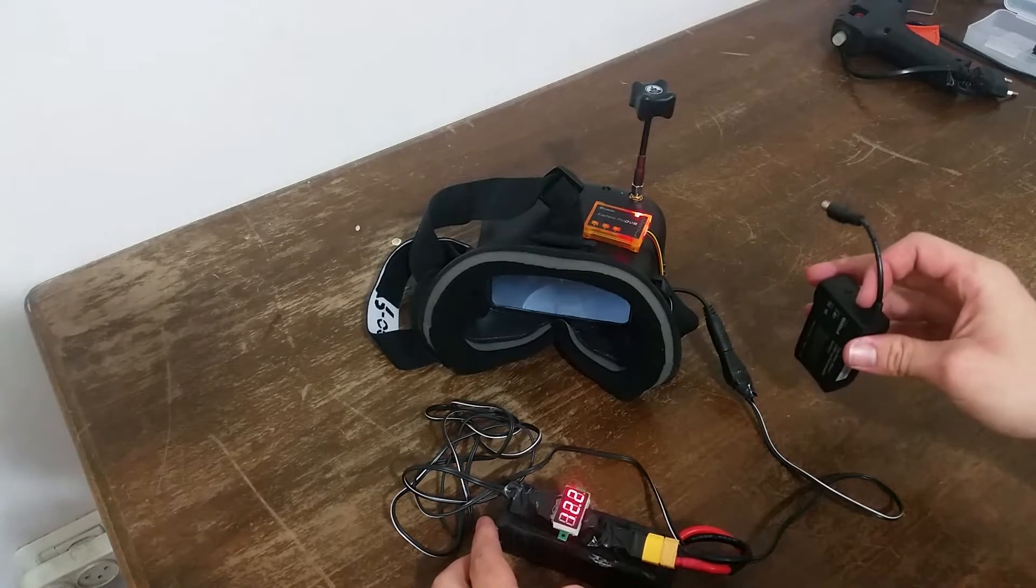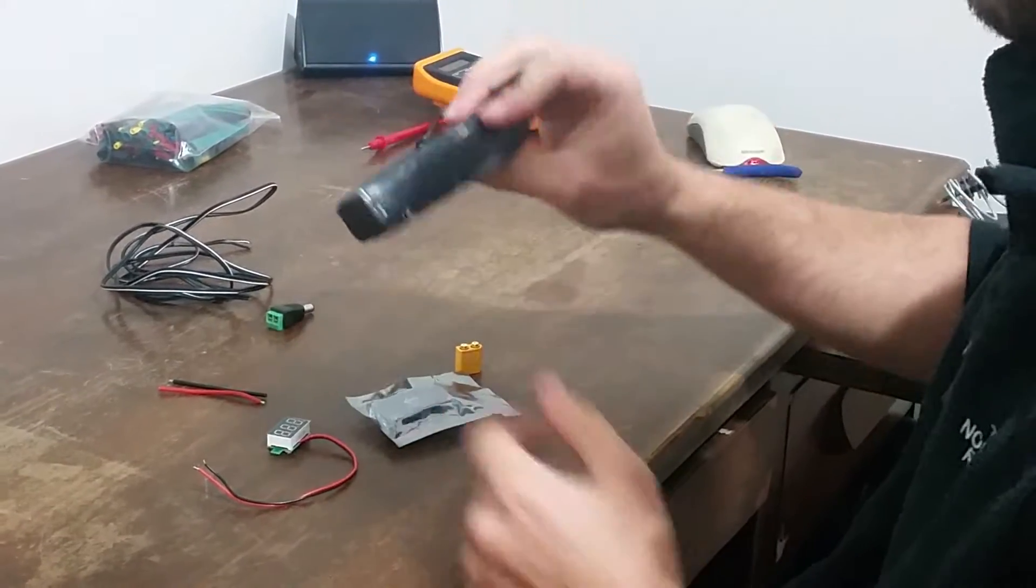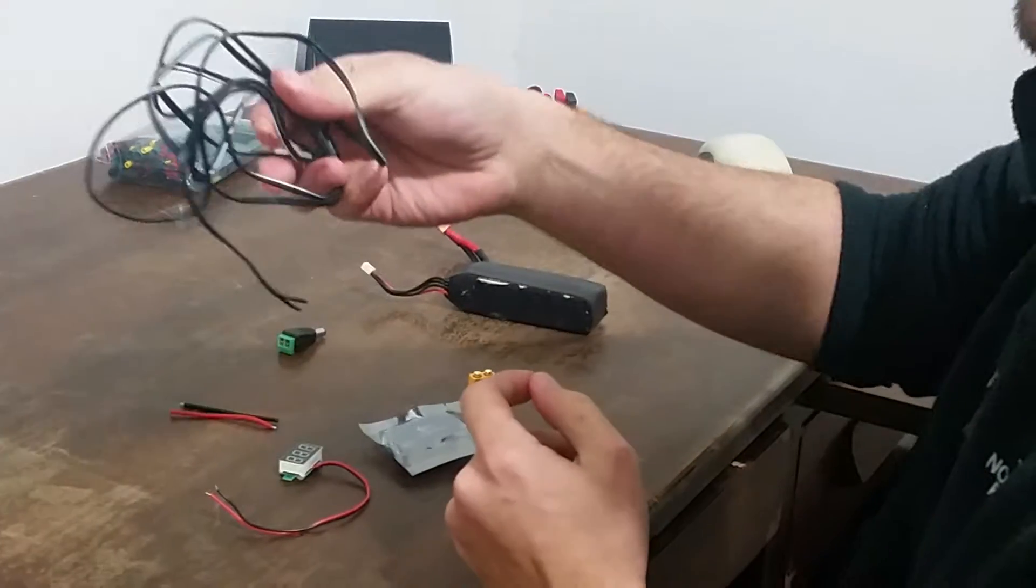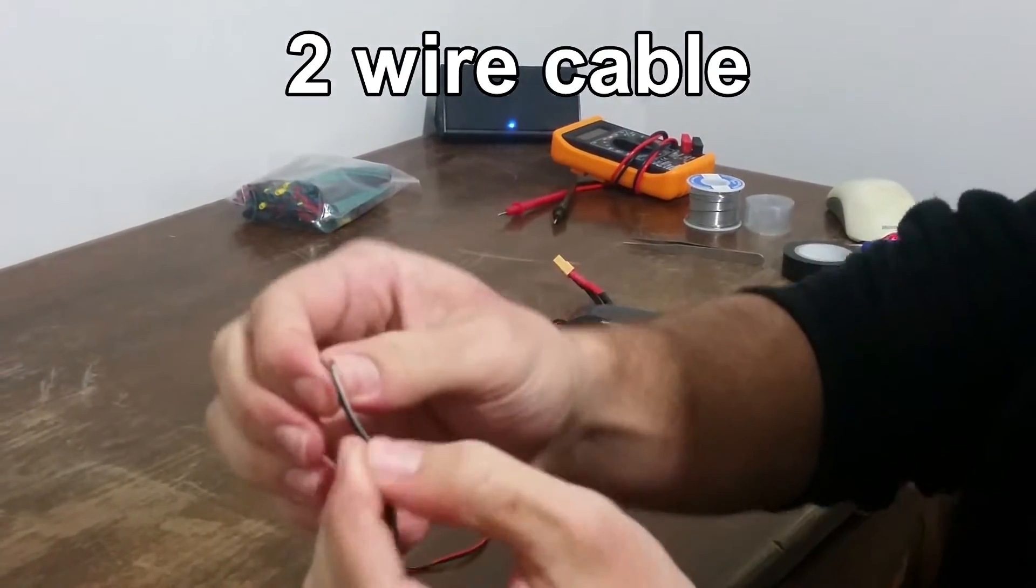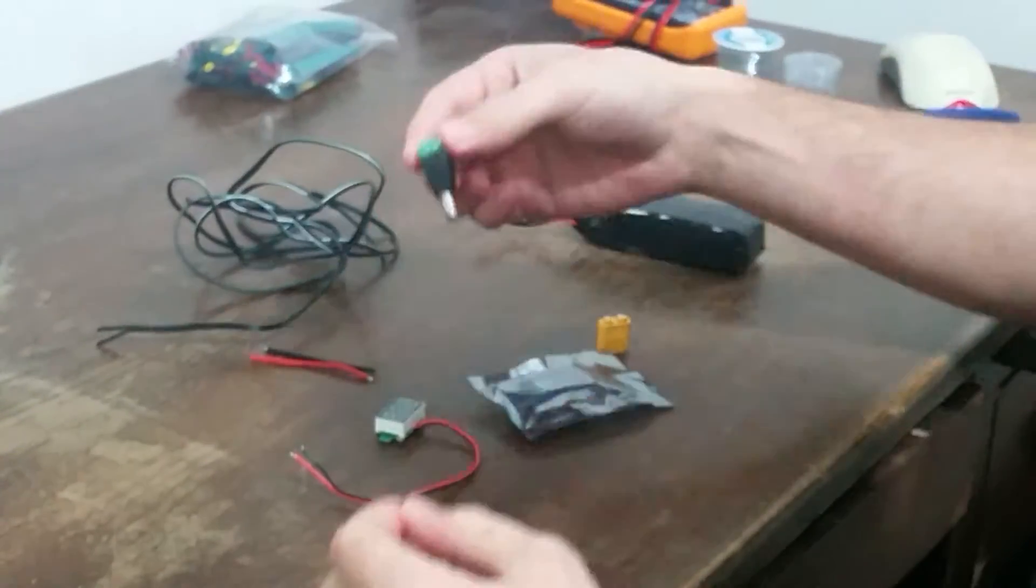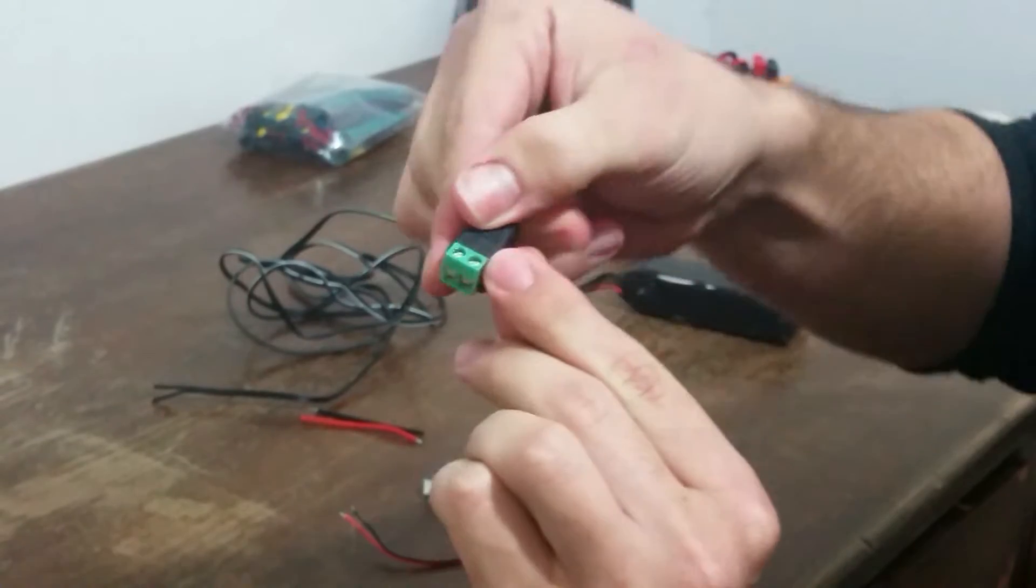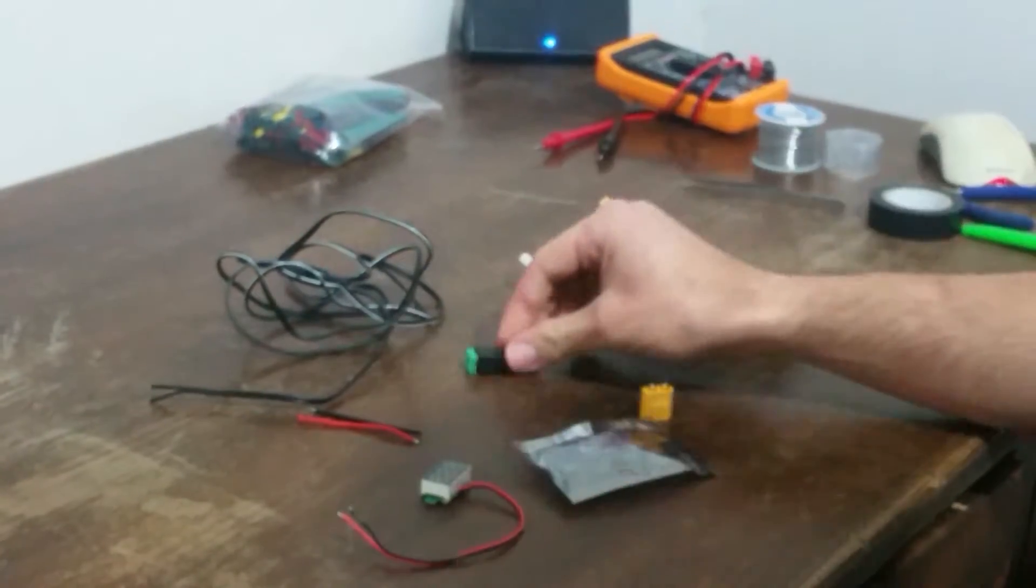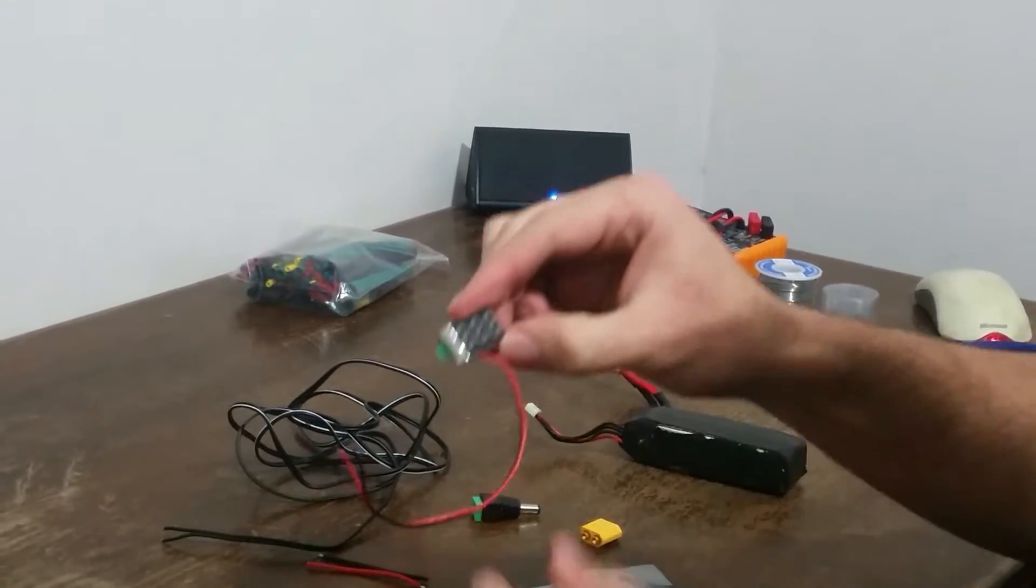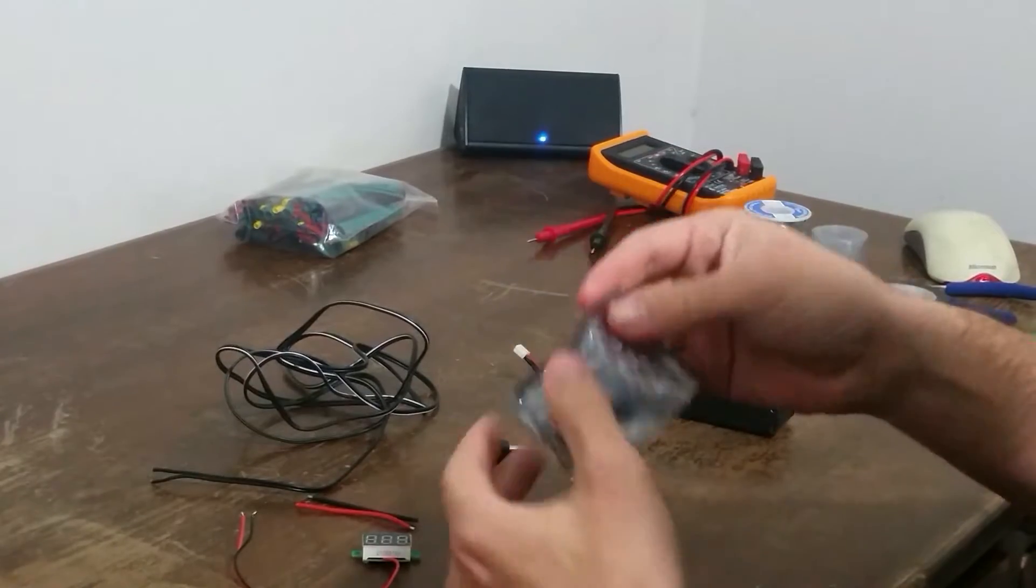So let's get to the build. For the parts list I'm going to use a 3S battery, the 2200 milliamp. I'm going to use some spare cable, just two-sided cable. I'm going to use a barrel connector that you could connect the cable into it very simply with screws. I'm going to use an XT60, a female XT60. I'm going to use a small voltmeter and I'm going to use a step-down converter.